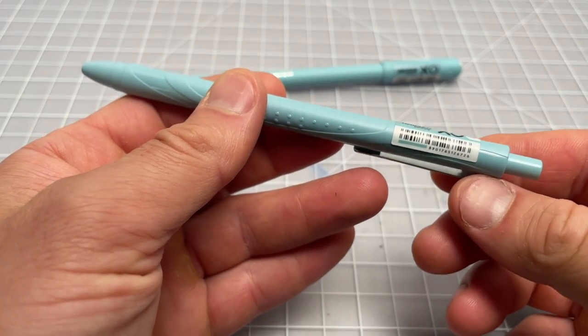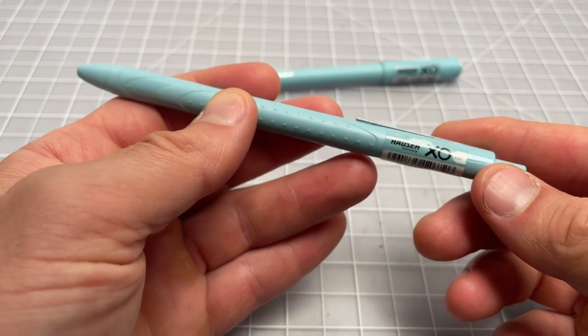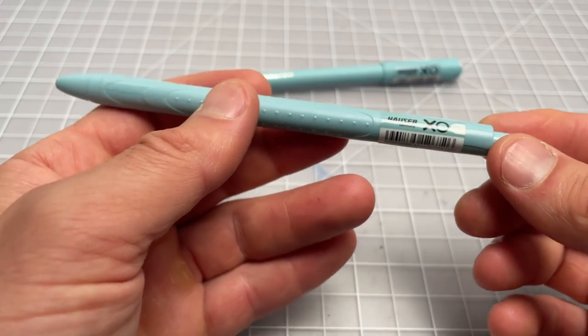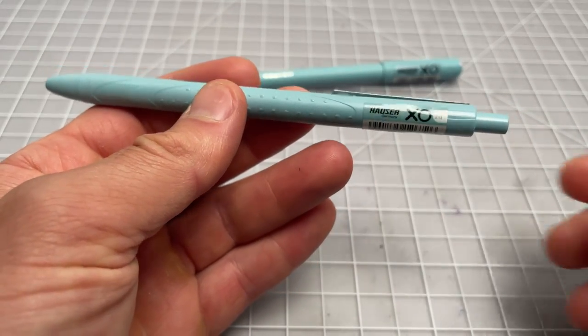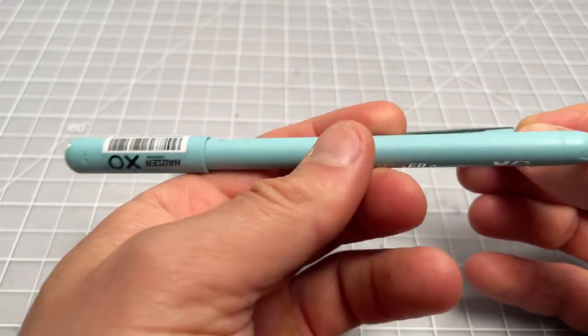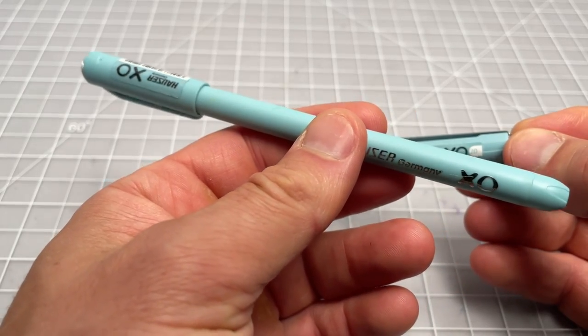So in this video, I wanted to spend a few minutes talking about this pen. It is called the Hauser XO20. It's basically a retractable version of this pen, which is the Hauser XO.